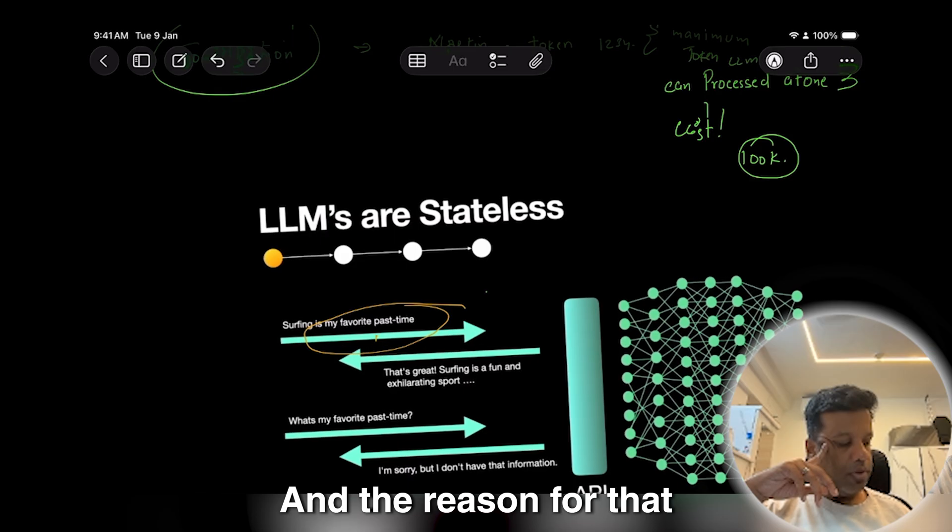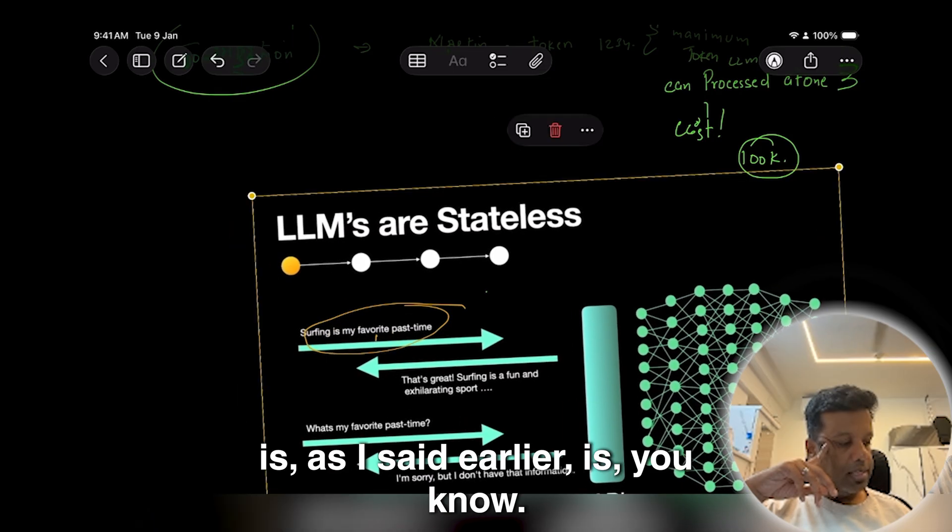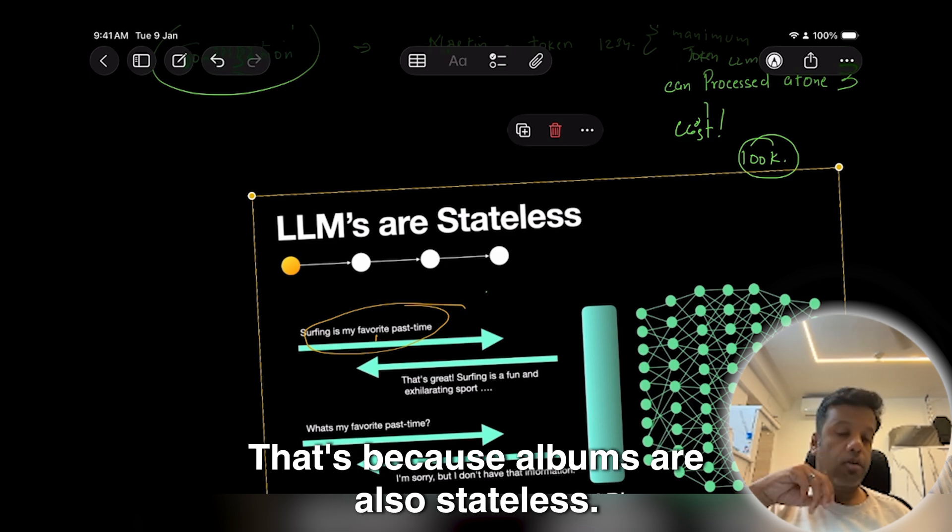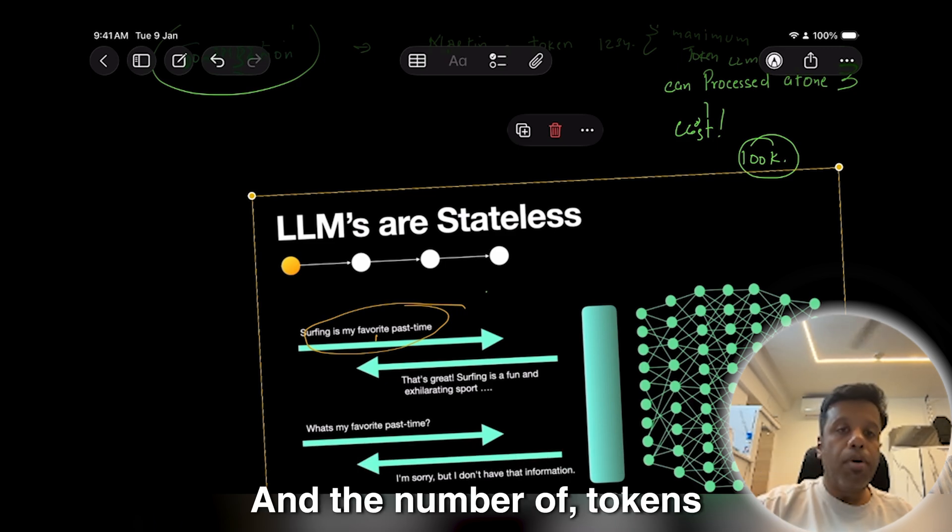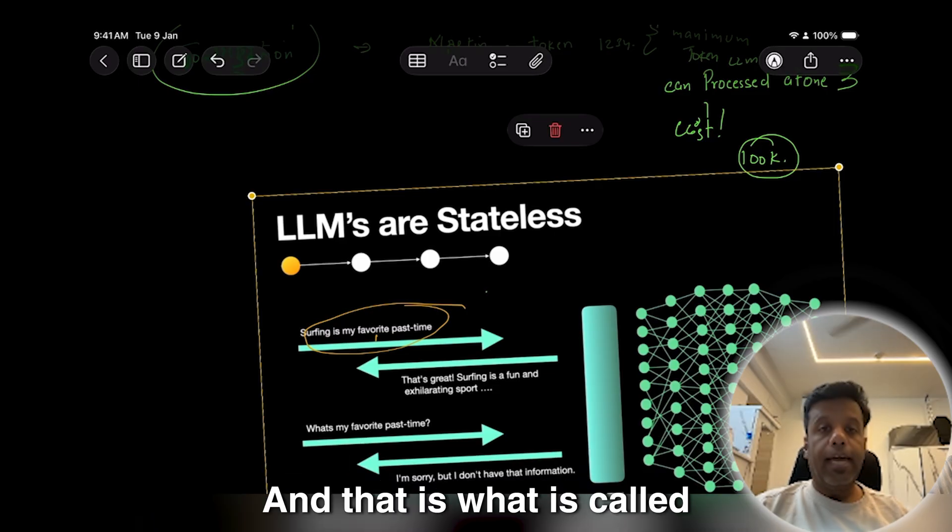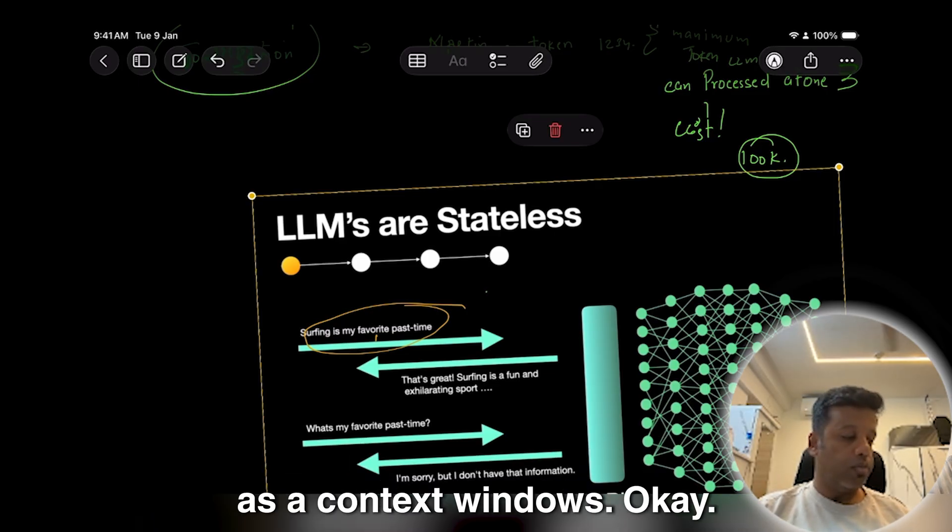And the reason for that is, as I said earlier, it is out of the context window. That's because LLMs are stateless, and the number of tokens that it has consumed is going beyond that. And that is what is called a context window.